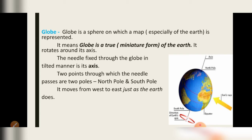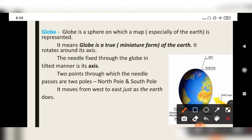A globe is a sphere on which a map, especially of the earth, is represented. It means a globe is a true miniature form of the earth. It rotates around its axis. As you can see in the picture, this is your globe, this line is your axis line, this is your north pole and here is your south pole. And it moves west to east — meaning it is moving anticlockwise.